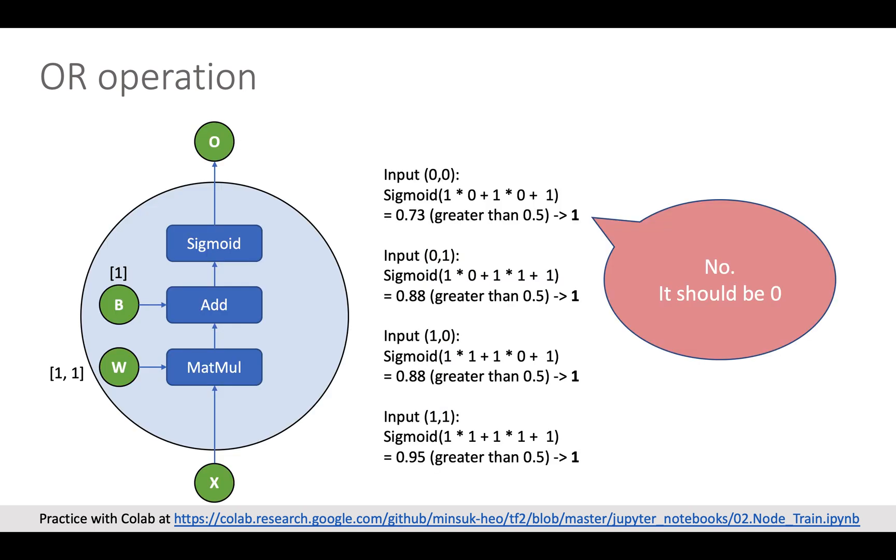And here is our node. Just like the baby initially speak mama, the node also has initial random variable for weight and bias. I assigned one for each as you can see from this diagram. And you can see the right side which is a forward propagation result for four inputs for the OR operation. There is one wrong answer.